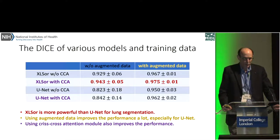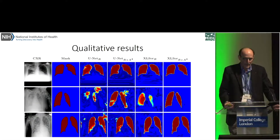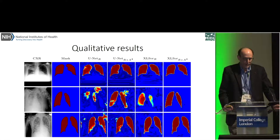Also greater performance compared with UNet with or without the crisscross attention. Here are some qualitative results where the chest radiographs are on the far left. The masks on the second column are the reference standard. On the far right, you can see the Excelsior version that shows excellent segmentation.